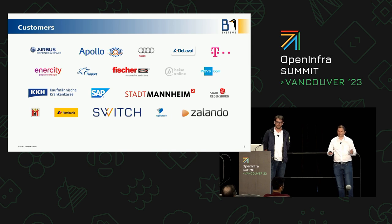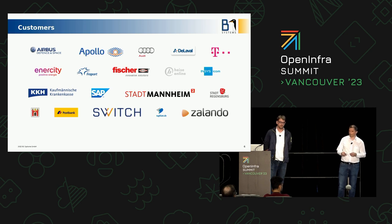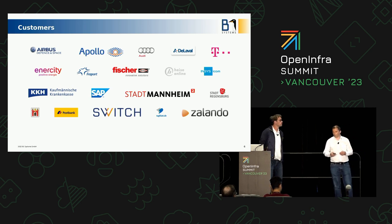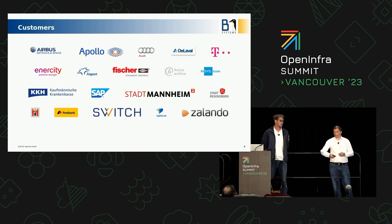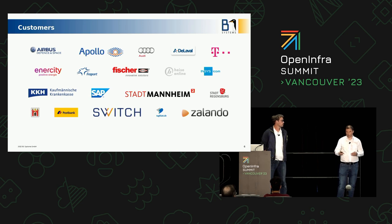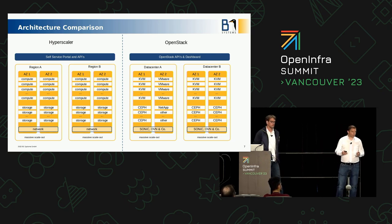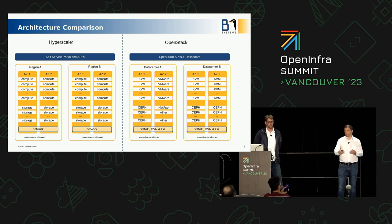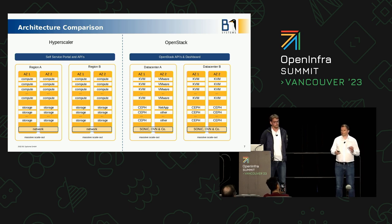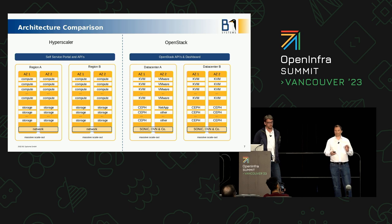Just to name a couple of internationally known customers — for example, Airbus Industries, Deutsche Telekom, Audi, and SAP. These are the most important customers on that slide that have an international brand. With that, I'd like to dive into a little architecture comparison. This is a very simplified slide, but it already shows that there are similarities between the hyperscalers and OpenStack.